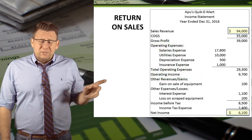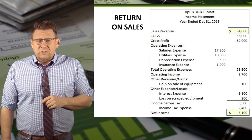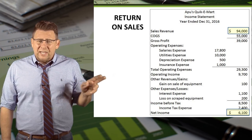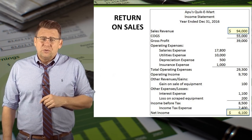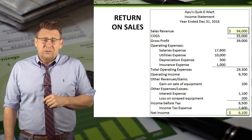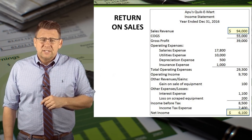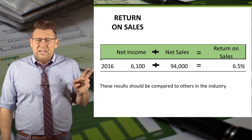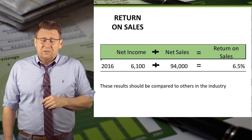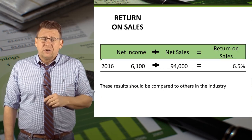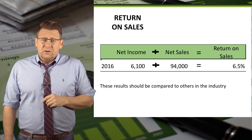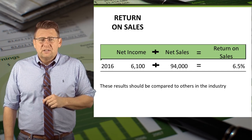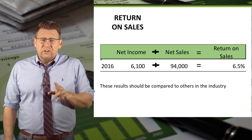Here is an income statement from our sample company. We'll use the highlighted net sales and net income to determine the return on sales. For 2016, net income divided by net sales revenue gives us a return on sales of 6.5%.